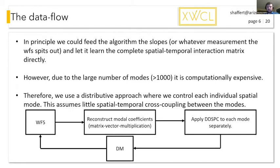So this algorithm, in principle, we could create the complete spatial temporal interaction matrix. So you can just go from your modal coefficients to your slopes and let it learn that full interaction matrix. But that's quite computationally expensive, especially if you do it for XAO systems that have more than 1000 modes. Then you're talking about learning matrices that are on the size of 10,000 by 10,000. And then you also have correlation matrices. So it's really computationally expensive.